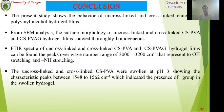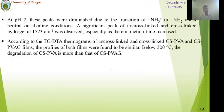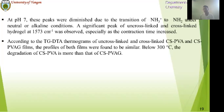The uncrosslinked and crosslinked CFPVA was swollen at pH 3, showing the characteristic peak between 1540 to 1562 per centimeter, which indicates the presence of all the crosslinks and swelling in the hydrogel. At pH 7, these peaks diminish due to the transition of NH3+ to NH2 under alkaline conditions. The CFPVA significant peak of uncrosslinked and crosslinked at 1573 per centimeter was observed, especially as the crosslinking time increased. According to TGA of uncrosslinked and crosslinked CFPVA, the degradation profile of both forms was found below 300 degrees Celsius. The degradation of CFPVA crosslinked is more than that of CFPVA uncrosslinked.